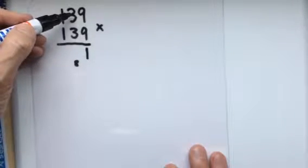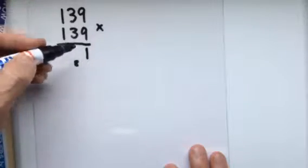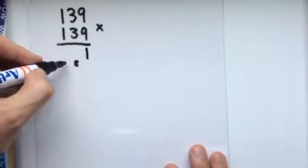9 times 3, well it's actually 9 times 30, but it's 3 tens. 9 times 3 is 27, 27 plus the 8 is 35.